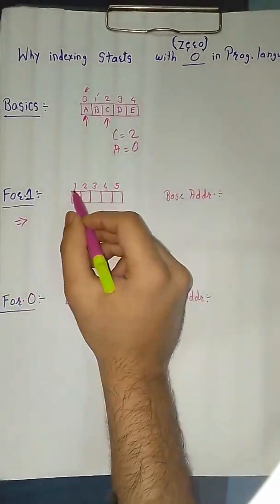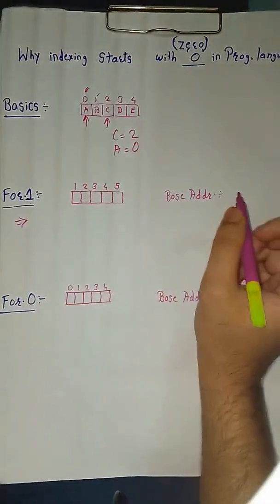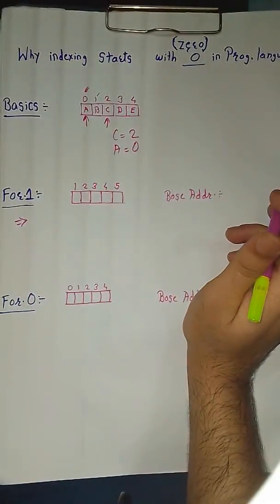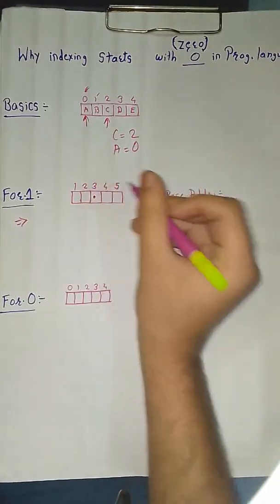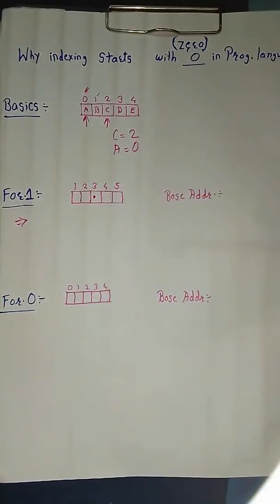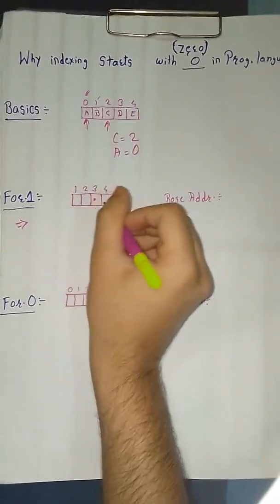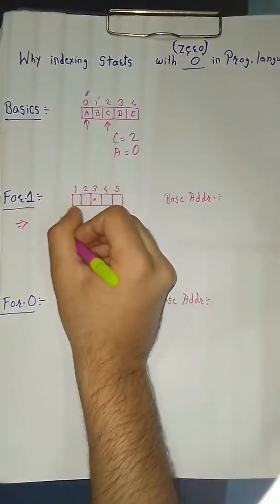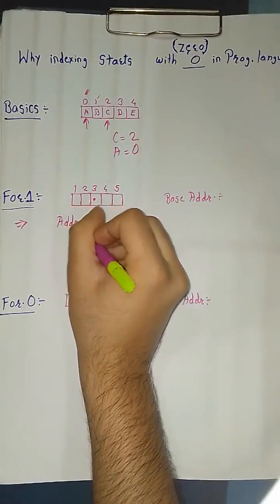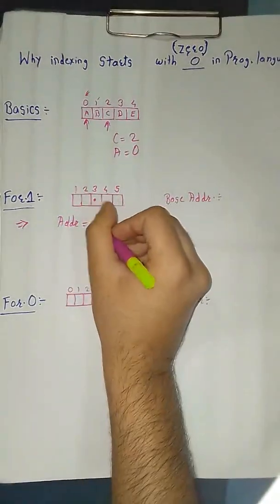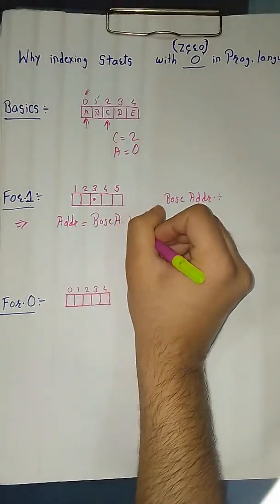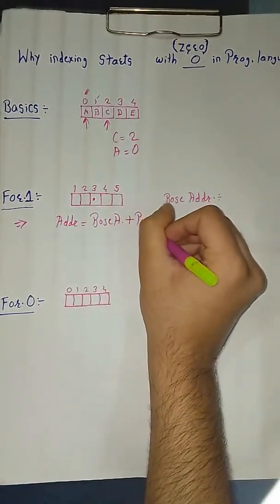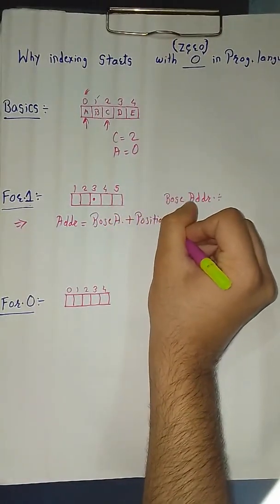In this first case, we have taken indexing starting from 1. Suppose if anyone said you that you have to find the index of this third element, how will you find it out? The formula for finding the address of this given element is: Address equals base address plus position.